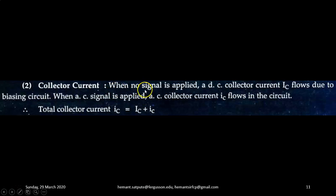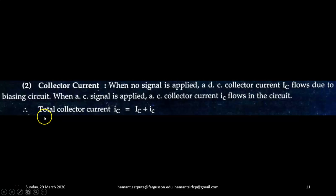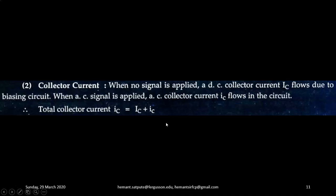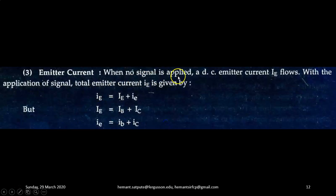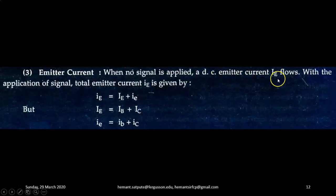Next is collector current. When no signal is applied, a DC collector current, capital I with suffix C, flows due to biasing circuit. When AC signal is applied, an AC collector current, small i with small suffix c, flows in the circuit. So the total collector current will be equal to DC collector current plus the AC collector current, which arises due to the application of the input signal. Next is emitter current. When no signal is applied, a DC emitter current, capital I with suffix E, flows. With the application of signal, total emitter current IE is equal to DC emitter current plus the AC emitter current which flows under the application of input signal.